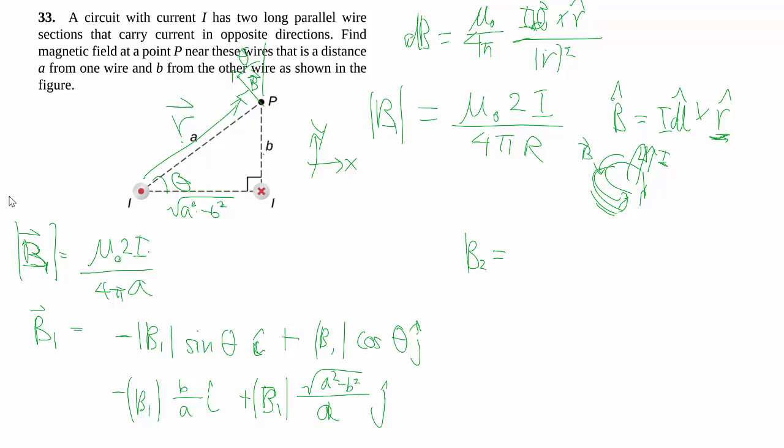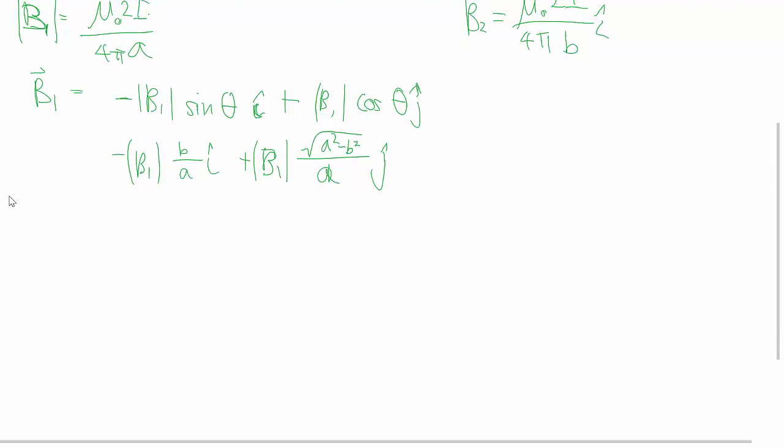B₂ is quite a bit simpler. Same expression, except R is now just B. In terms of direction, through whichever method you want, you should get that B₂ is solely in the positive x direction. And so we go ahead and add them up.